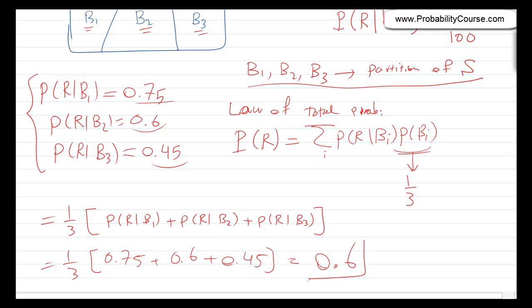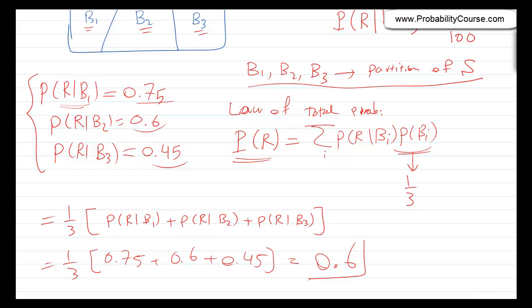That's the probability that the chosen marble is red. I stress the fact that in this problem we were interested in probability of R, but what we knew was probability of R given Bi's. So we used the law of total probability to solve this problem. Thank you.